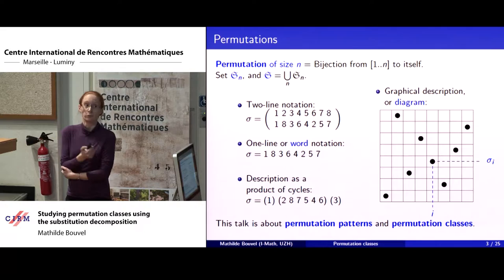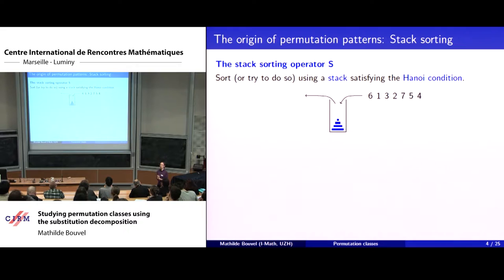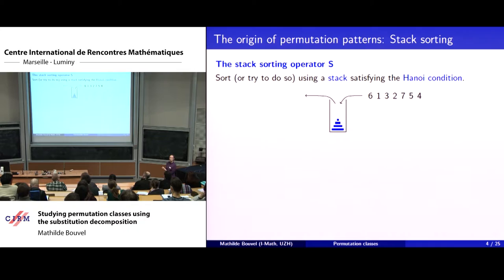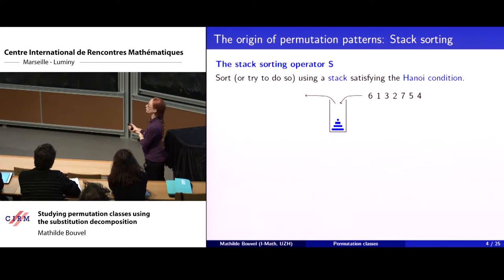To get to permutation classes I need to speak about permutation patterns, and I thought it would be nice to know the history of that notion. Imagine you have a sequence of numbers — here it's a permutation, but it doesn't have to be as long as the numbers are distinct. You have a stack which you require to satisfy the Hanoi condition: your numbers must be increasing from bottom to top.